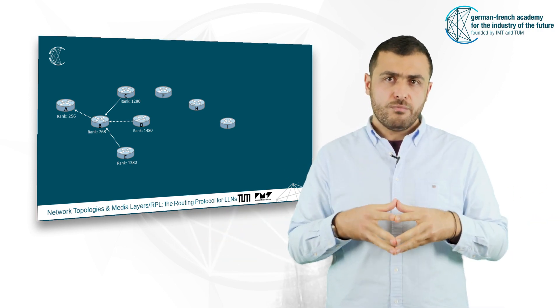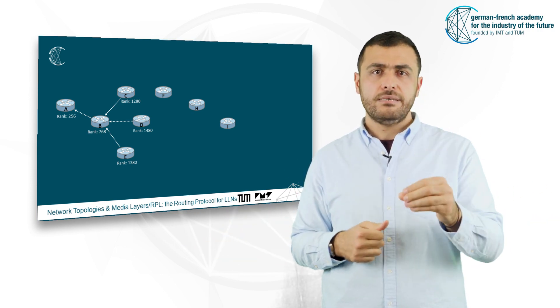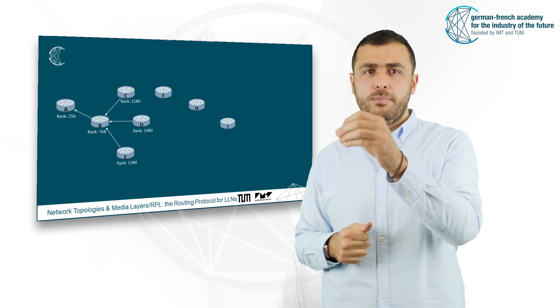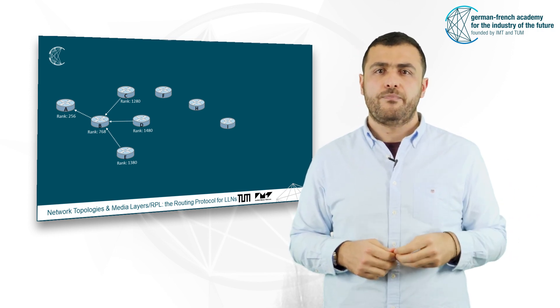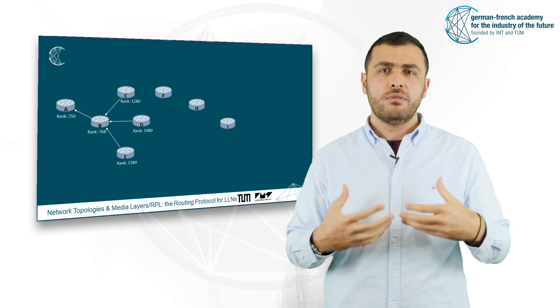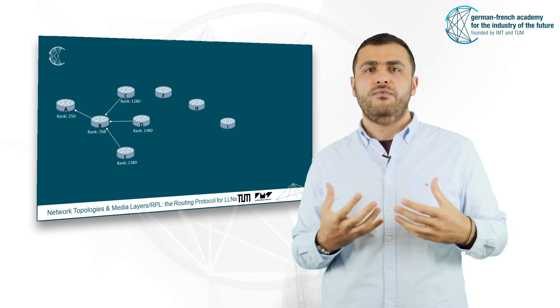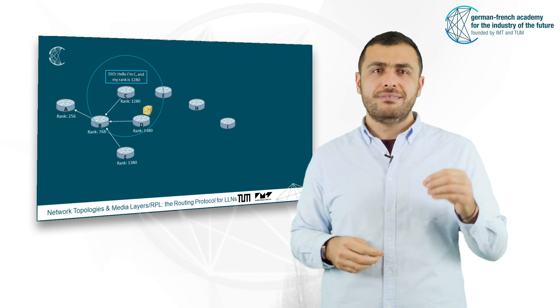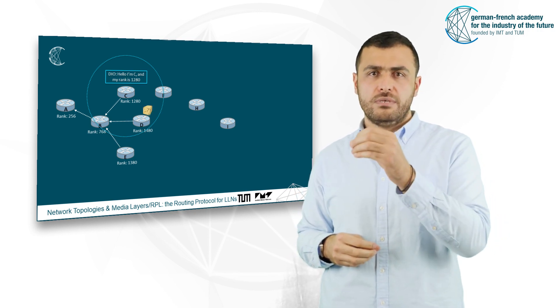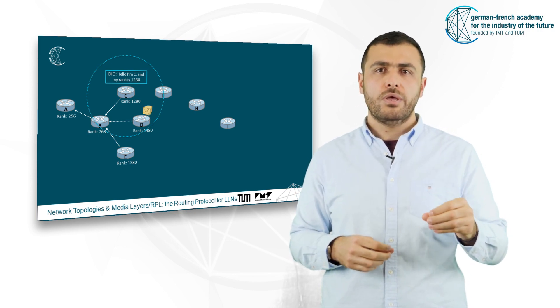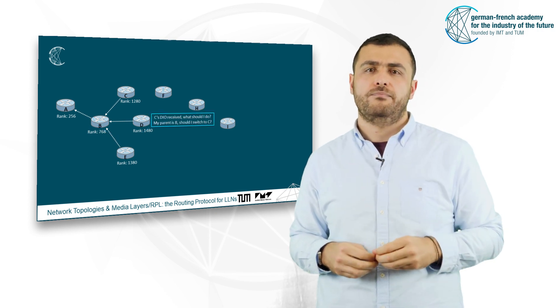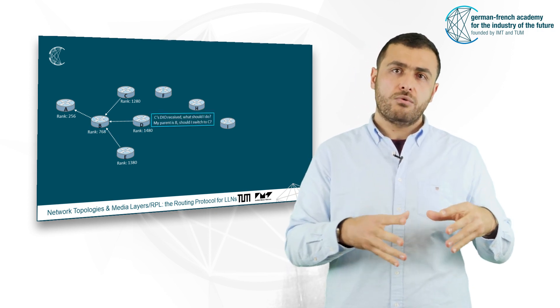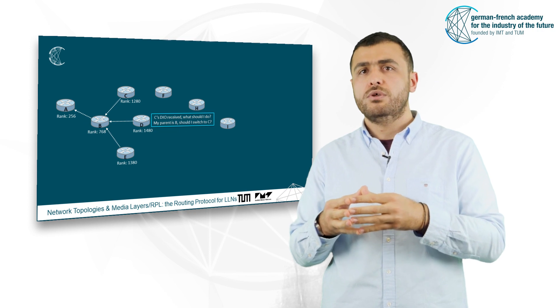Let's assume that the nodes C, D, E have chosen the node B as a preferred parent and that they have computed the rank based on the rank of node B. When the node D receives the DIO from the node C, it needs to choose which will be its preferred parent, either to stay with the node B or to switch to node C.